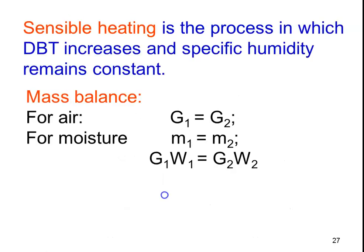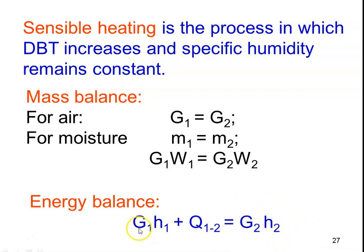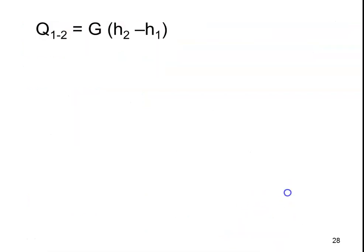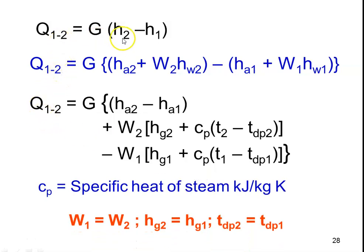Now we calculate the parameters. For mass balance: there is no change in mass of air, so G1 = G2. Since there is no change in specific humidity, M1 = M2, and G1·W1 = G2·W2. Writing the energy balance: energy at inlet plus heat supplied equals energy leaving, so G1·H1 + Q = G2·H2. Therefore Q₁₂ = G·(H2 − H1), where H1 and H2 are enthalpies of the air and water vapor mixture.